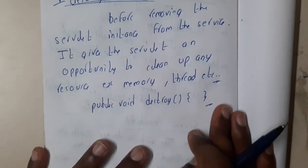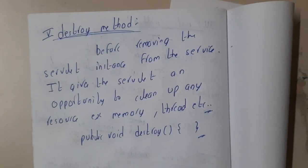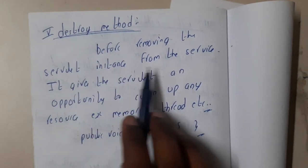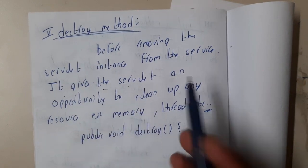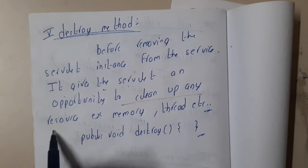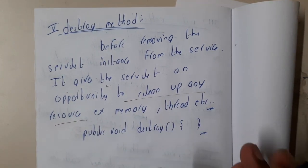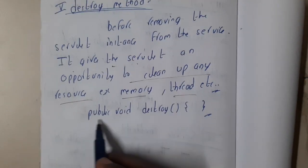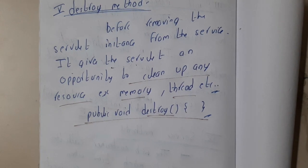The destroy method is where you deallocate memory, space, or threads. Before removing the servlet instance from service, it is given an opportunity to clean up any resources — such as memory or threads — left or saved for that particular task. You simply call destroy() and the servlet is destroyed.